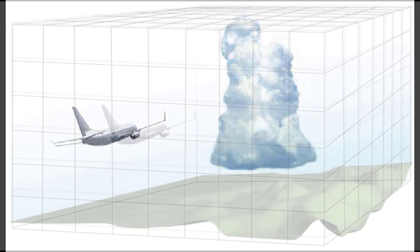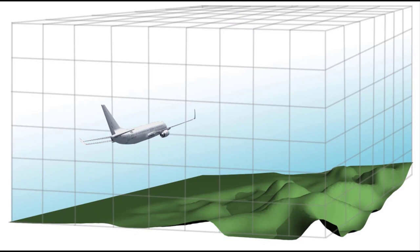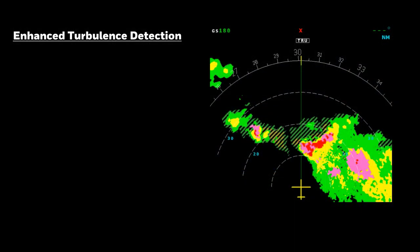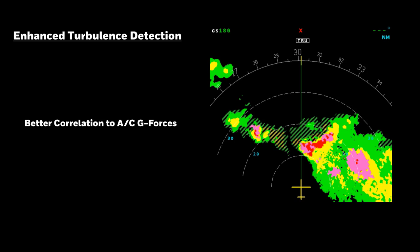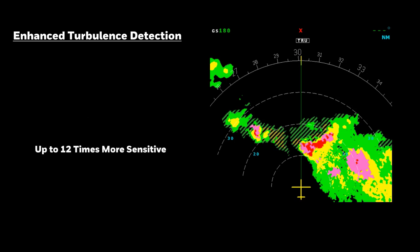In ground map mode, ground returns are provided by the radar — not the internal terrain database — allowing independent verification of position. Other information in the 3D buffer includes enhanced turbulence data, provided out to 40 or 60 nautical miles depending on the system. The new enhanced turbulence detection provides more sensitive and accurate turbulence information with fewer false alerts and improved correlation to predicted aircraft g-forces. It is up to 12 times more sensitive than current systems.